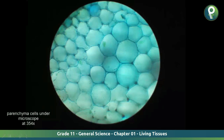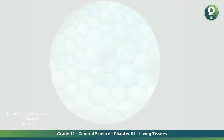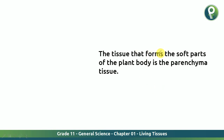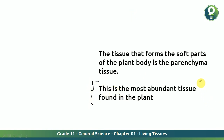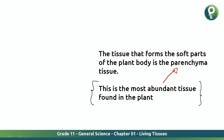When you look at the parenchyma cells under the microscope, it looks very spongy — like a piece of natural sponge. The tissue that forms the soft parts of the plant body is the parenchyma tissue. This is the most abundant tissue found in the plant. If someone asks which is the most abundant tissue found in the plant, the answer is parenchyma tissue.